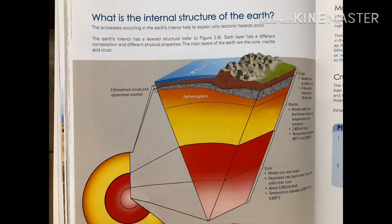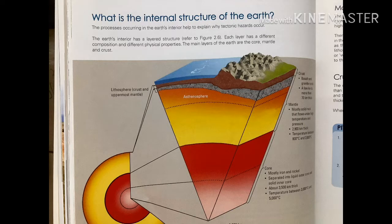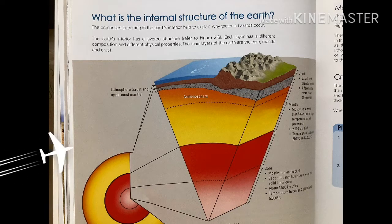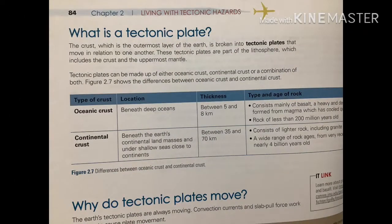What you see here is the internal structure of the earth with the solid core, the molten mantle layer, and the solid crust which we are living on. The crust is the cooler layer; the mantle and the core are superheated, so this is the cross section for you to take a look at.